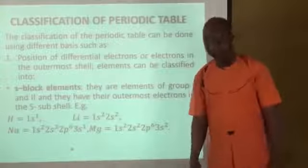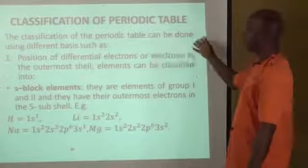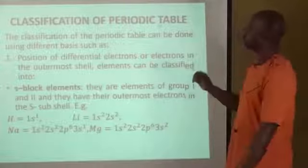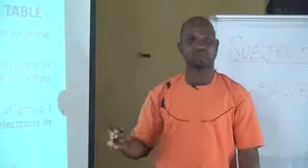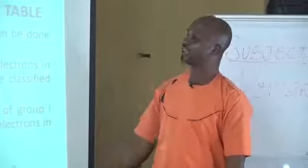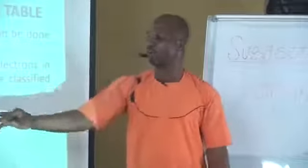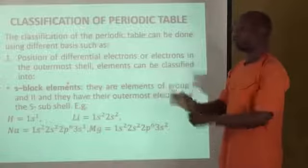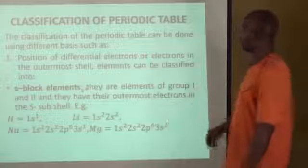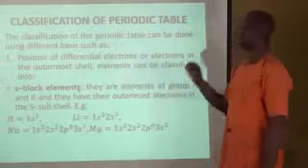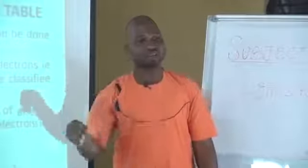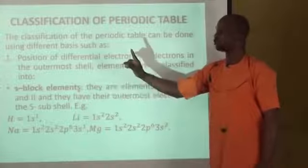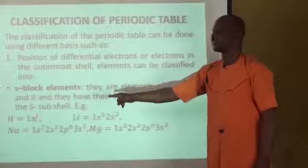I would like to tell you the classification of the periodic table. The periodic table can be classified on several bases, but one basis I want to lay emphasis on is the position of the differential electron — the electron in the outermost shell. Because of that, elements are grouped into S-block elements, P-block elements, D-block elements, and F-block elements. The S-block elements have their differential electron found in the S-subshell — that is why group 1 and group 2 elements are called S-block elements. For example, hydrogen is 1s1 and lithium's outermost subshell is 2s.